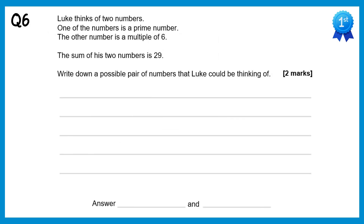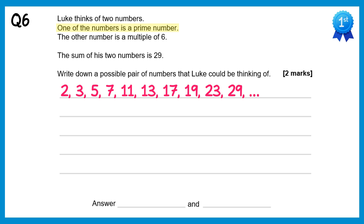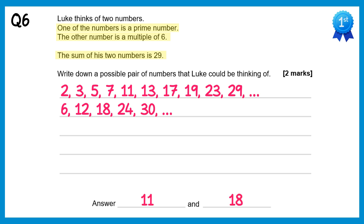Luke is thinking of two numbers: one is a prime number and the other is a multiple of 6, and their sum is 29. Possible pairs are: 5 and 24, or 11 and 18, or 17 and 12, or 23 and 6.